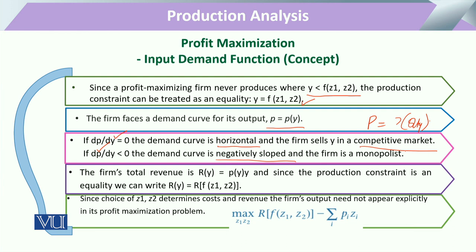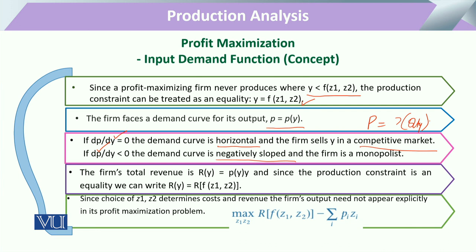From here, the firm's revenue is equal to price into quantity produced. Since we have taken the production constraint with equality, we say that the revenue of the firm is directly a function of inputs. Looking at these inputs and the choices made, it determines the cost and revenue of the firm. Therefore, the firm's cost, even if not explicitly appearing in profit maximization, is present within it in the form of the inputs.